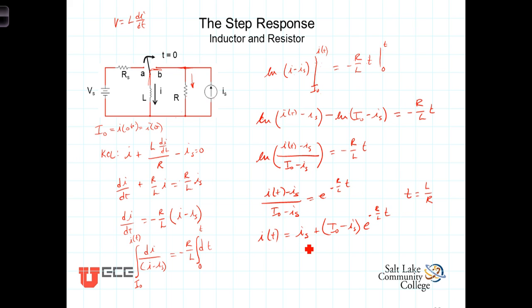And we can write it then as I(t) is equal to I(infinity), or the final current, plus the initial current minus the final current, or I as t approaches infinity, times e to the minus t over tau.